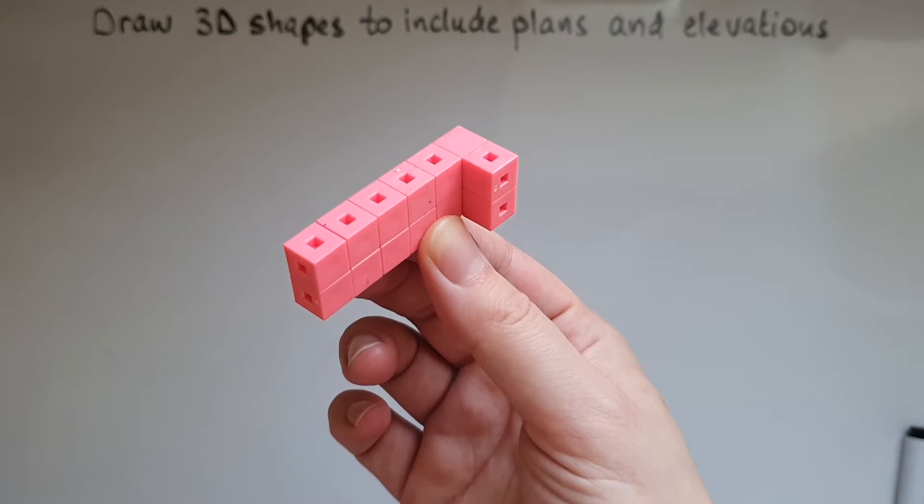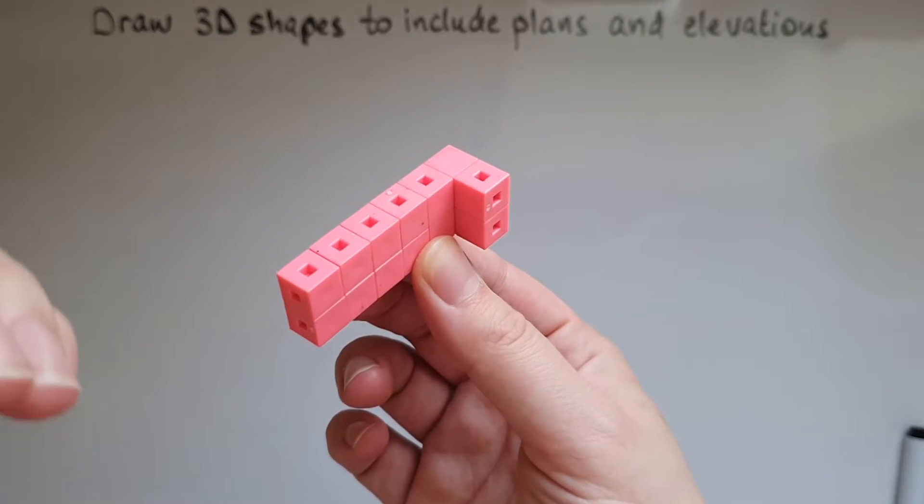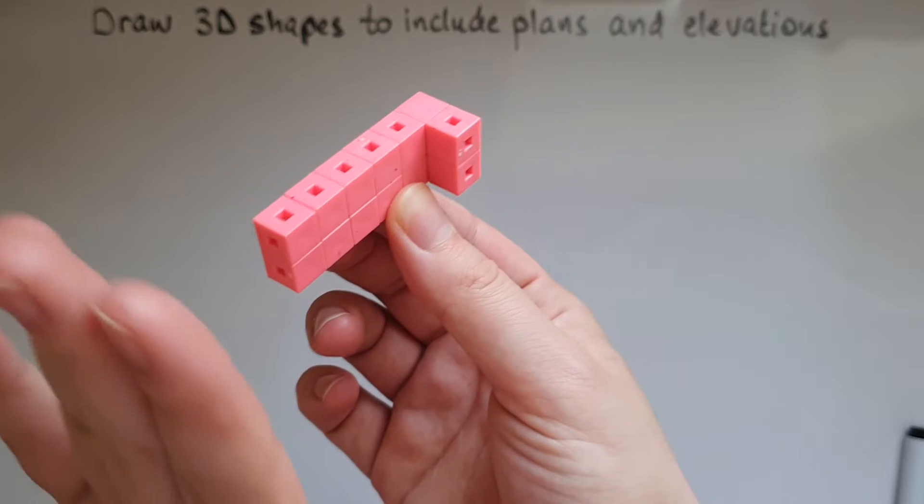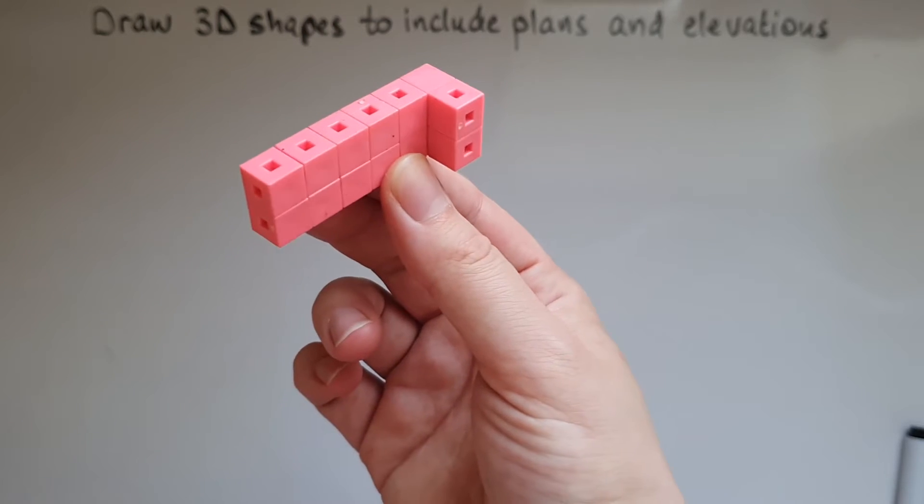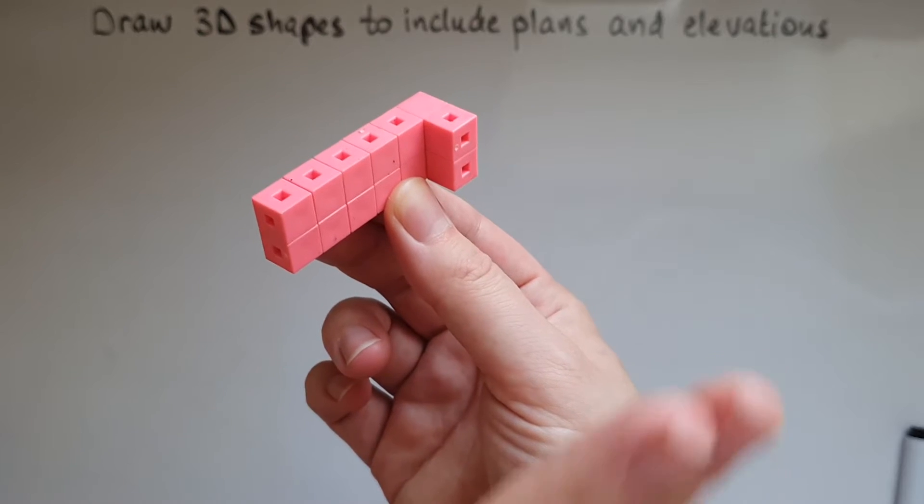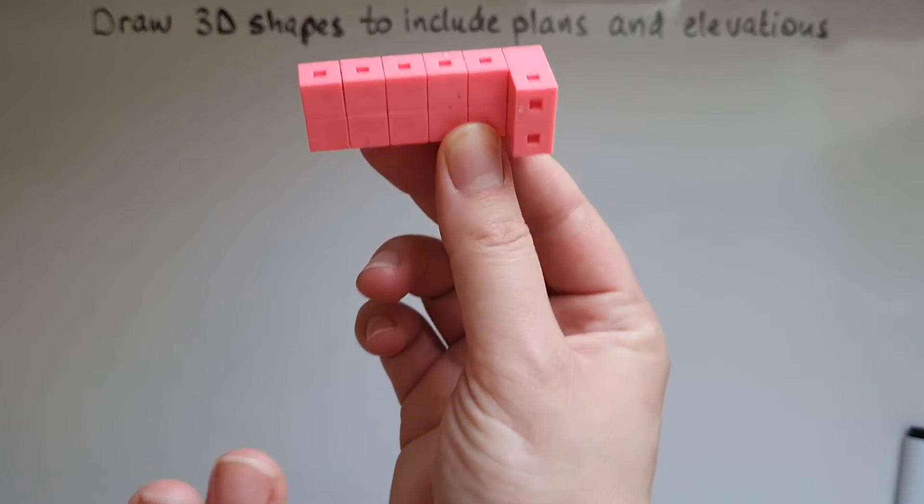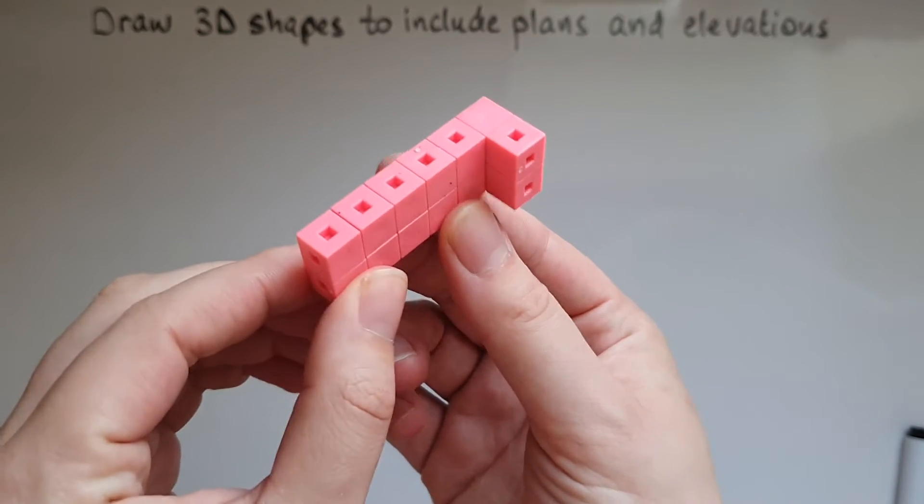And we have two elevations. We have the front elevation which is what you can see from here, and we have the side elevation which is what you can see from here. So we'll draw these together.